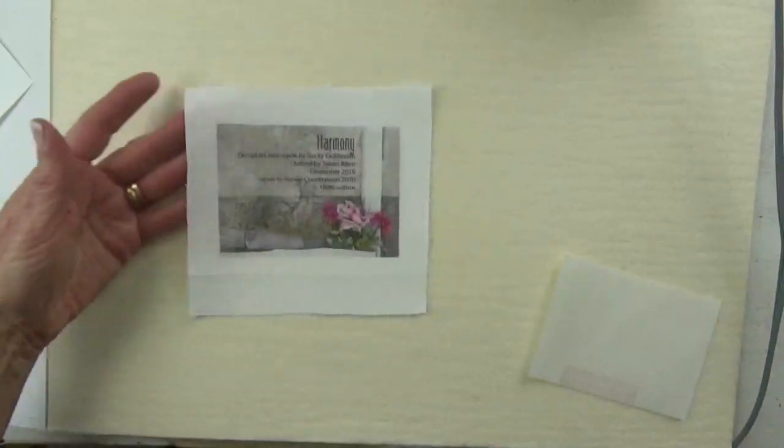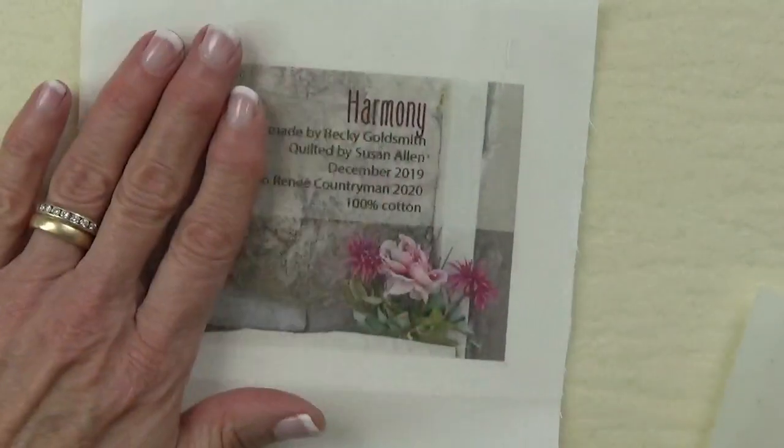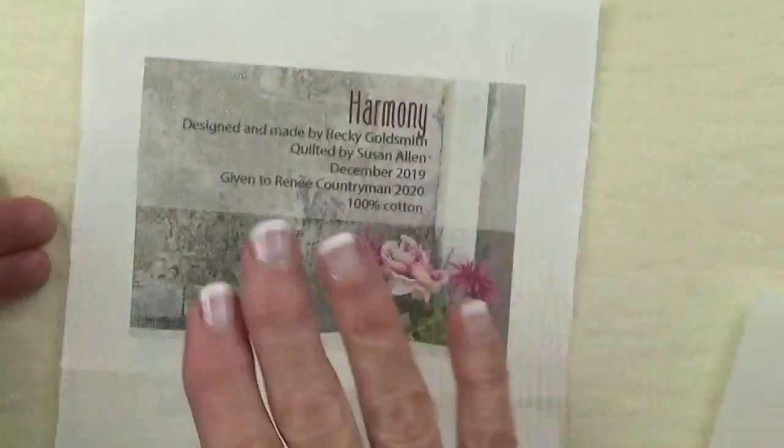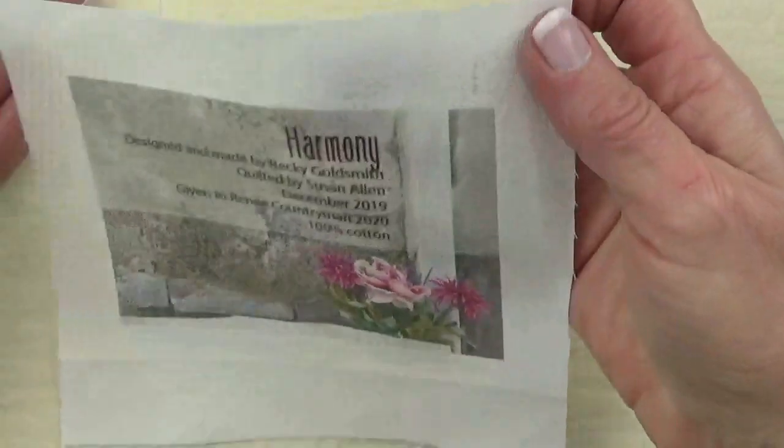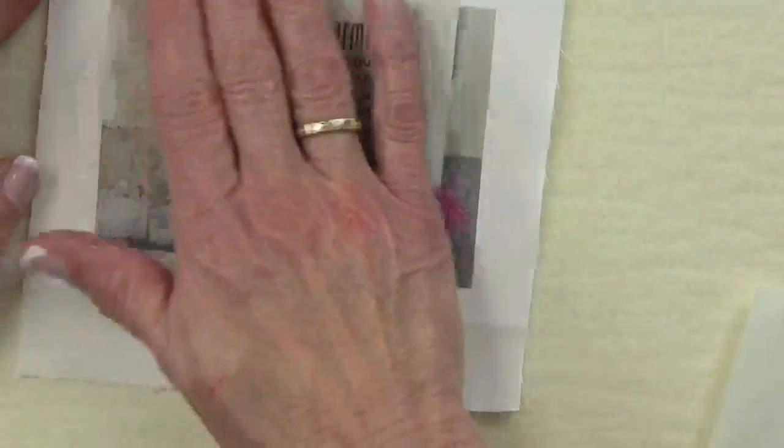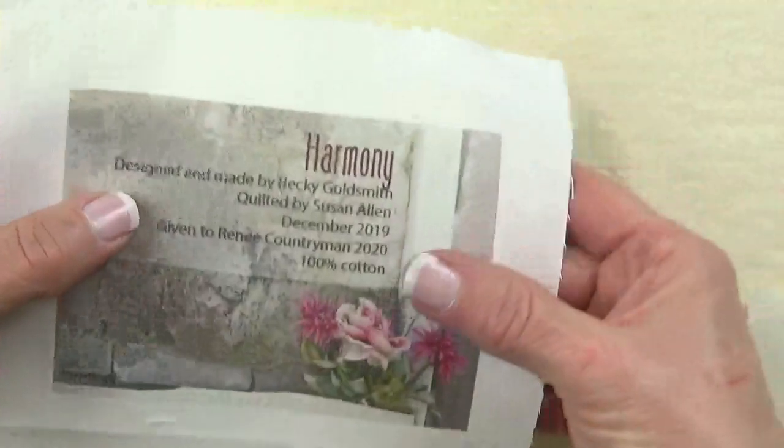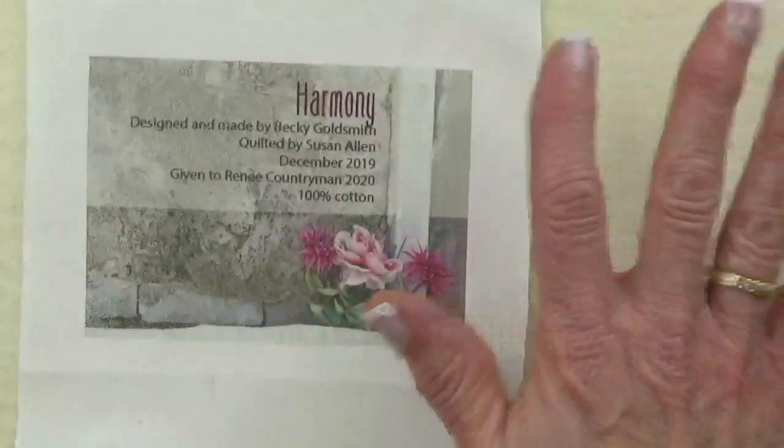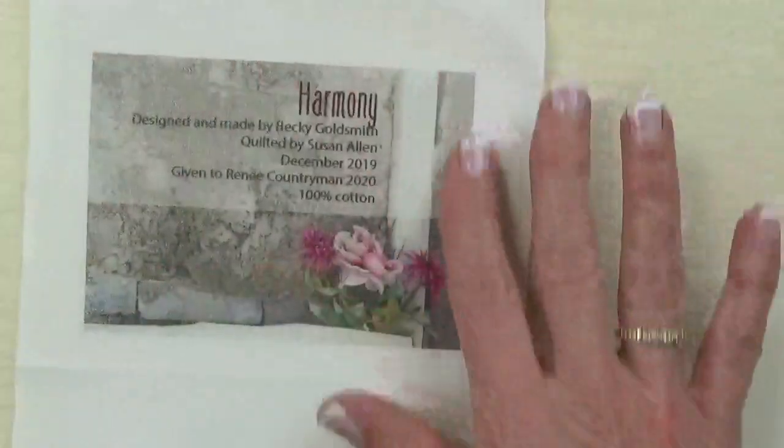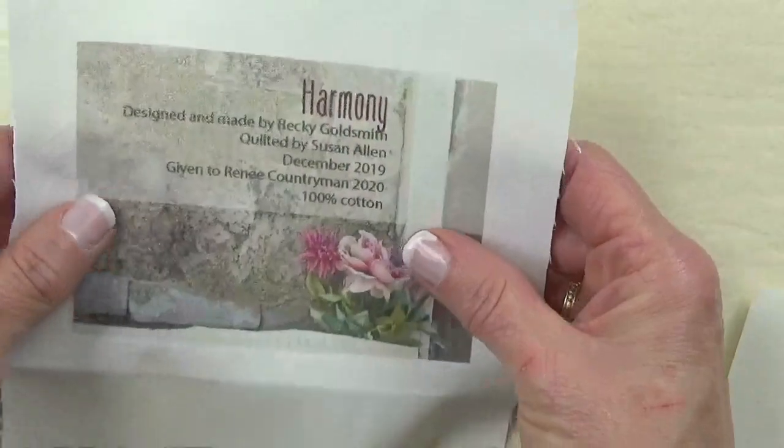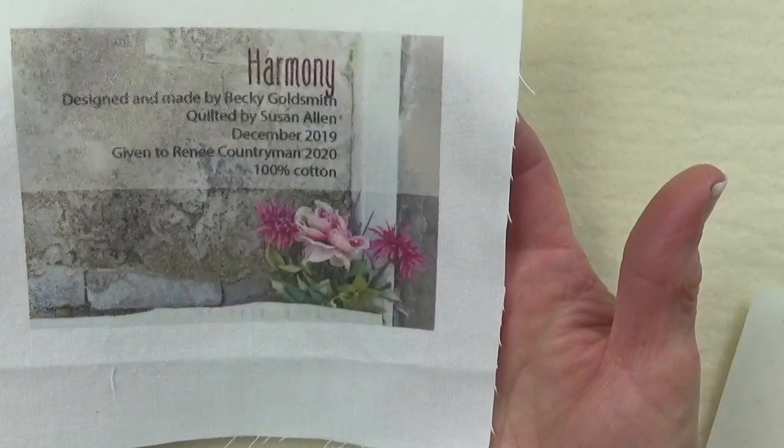So all of the polymer is now on the fabric laying over the inkjet part of this. The instructions say that the finer the weave of the fabric, the crisper the image will be. This is just a straight-up cotton off the bolt. If I was doing this on a pima cotton, I think it would be even a little crisper, but I don't mind that it looks like it's printed on fabric. You can feel that there is a polymer there. It feels a little different, but it does not feel bad. This is a beautiful way to transfer an image to fabric.